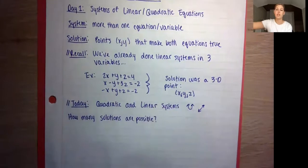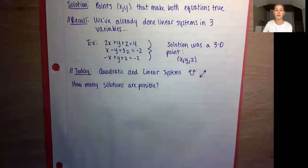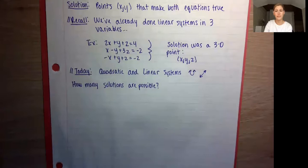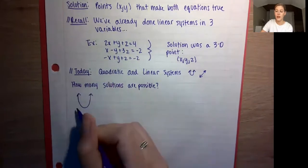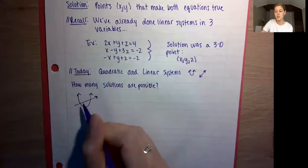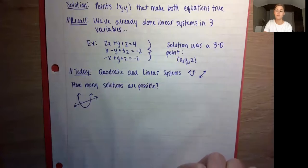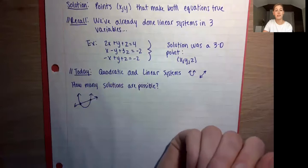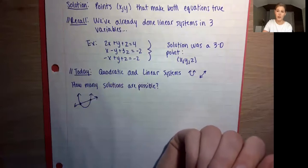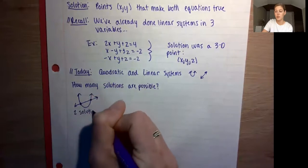Let's go through each type of hypothetical situation where we have a parabola and a line intersecting. The first thing that could happen: we might have a parabola and a line that goes right through the middle — something like this. How many solutions would you say we have here? Two, right — right there and right there. That's where they intersect, where the equations of the line and the parabola are equal. This is what two solutions would look like.